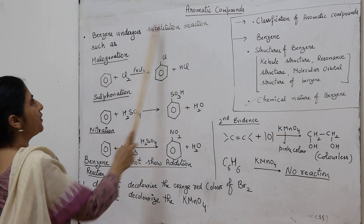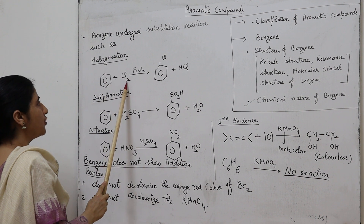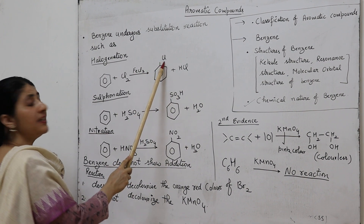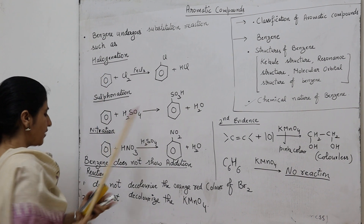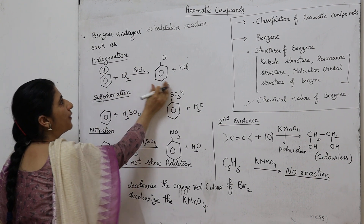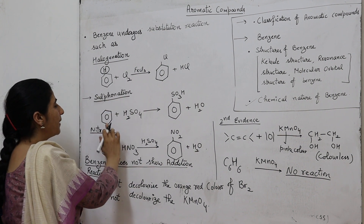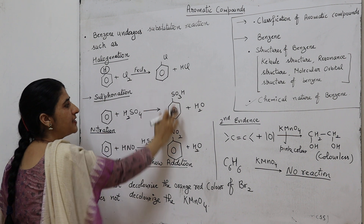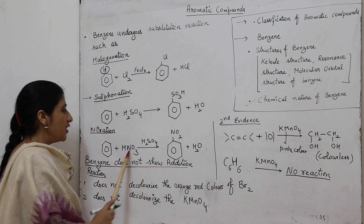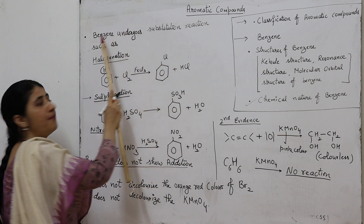However, benzene undergoes substitution reactions — it behaves as a substituting compound. For example, halogenation: when a halogen reacts with benzene in the presence of a ferric chloride catalyst, we get chlorobenzene. Chlorobenzene is obtained due to the substitution of hydrogen of benzene with chlorine — this is a substitution product. Second example is sulfonation: benzene reacts with sulfuric acid to form benzene sulfonic acid. Third is nitration: benzene reacts with nitric acid to form nitrobenzene. These all reactions show the substitution nature of benzene.